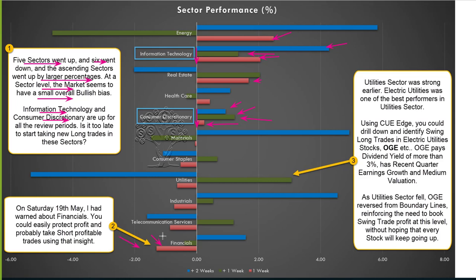Let's look at Financials. It is now down for two successive weeks — both the green and red bars are to the left of the zero line. On Saturday 19th May in the weekly market roundup, I had warned about Financials. That warning was based on the Q-Edge drill-down analysis. Using that warning, you could protect profit in Financials and could probably take short trades as well.